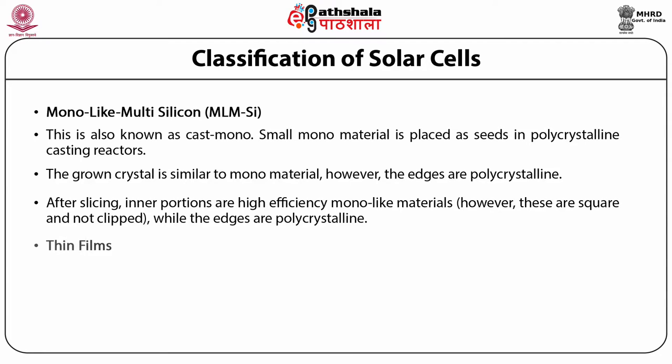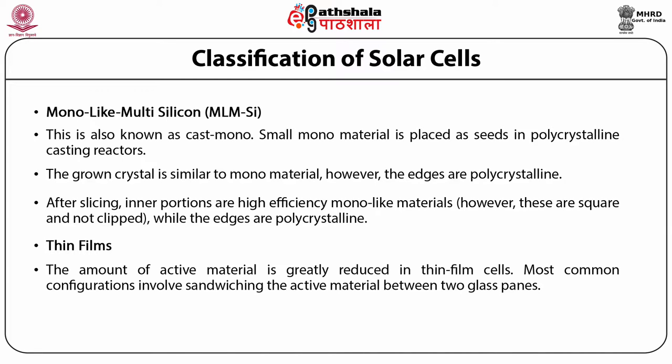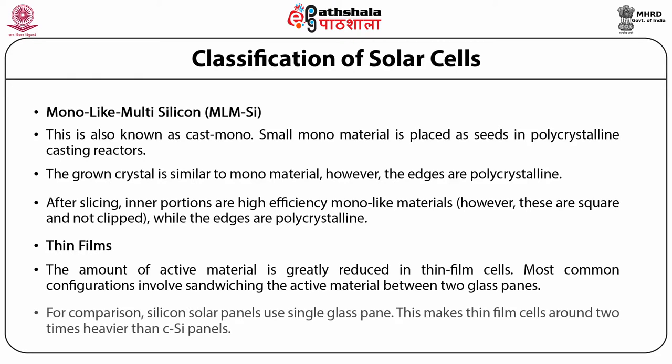Next is thin films. The amount of active material is greatly reduced in thin film cells. Most common configurations involve sandwiching the active material between two glass panes. For comparison, silicon solar panels use a single glass pane. This makes thin film cells around two times heavier than C-silicon panels. However, the ecological impact estimated by analyzing the life cycle of thin film-based cells is smaller.